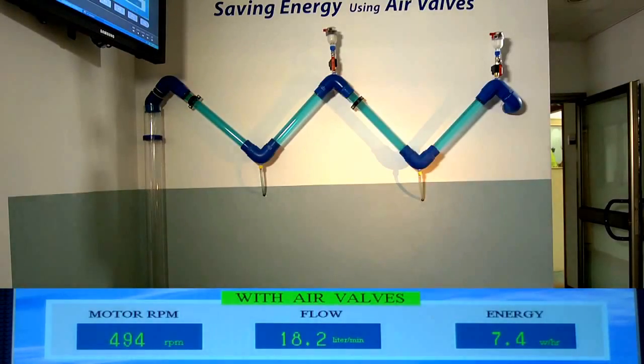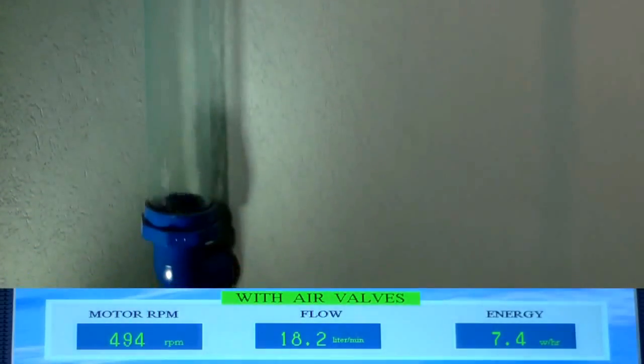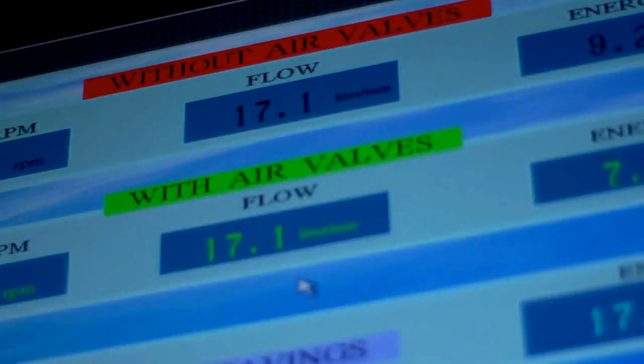At this stage, the data is transmitted to the controller. The controller then changes the current supplied to the motor in order to maintain the flow rate of 17.1 liters per minute.